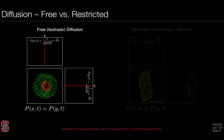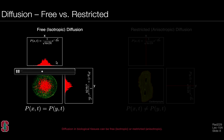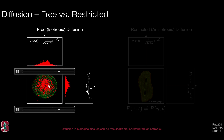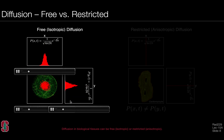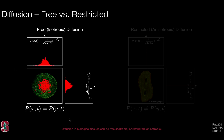The probability distribution function describes how spins move through space as a function of time. We can compare free versus restricted diffusion. In free diffusion, water moves through an isotropic medium, and the histogram of particle positions broadens similarly in both the x and y directions over time, indicating that the underlying diffusive process is quite similar in both directions.